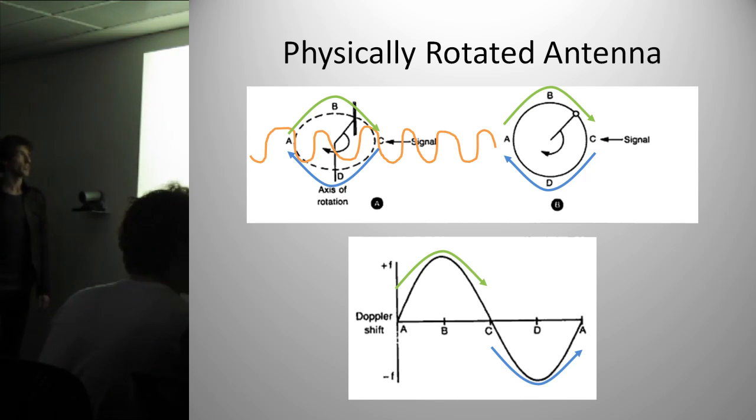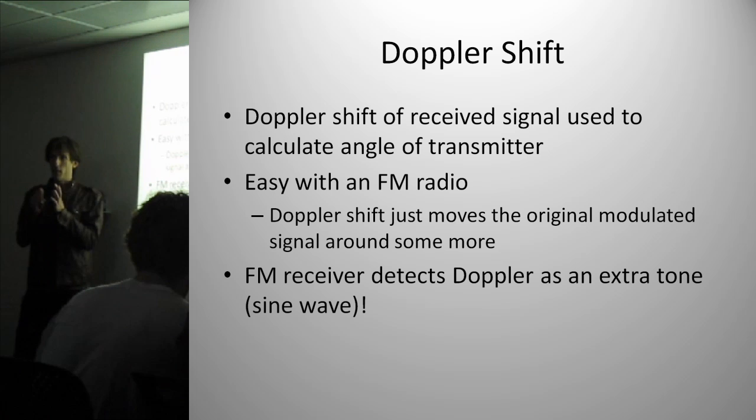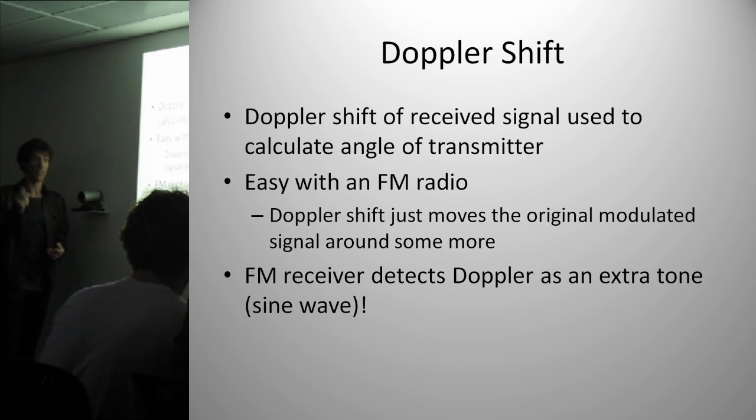What's really interesting is that this is really easy to pick up with an FM radio, because that sine wave is actually an extra modulation on top of that FM signal. So what happens is you plug into your FM radio, and you actually hear a sine wave coming out of it. And that sine wave holds the key to the direction of your transmitter. That's the short version.